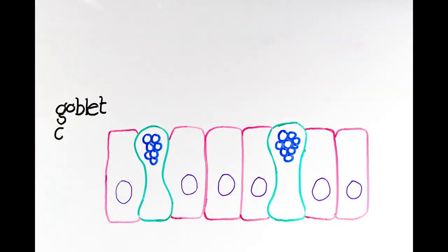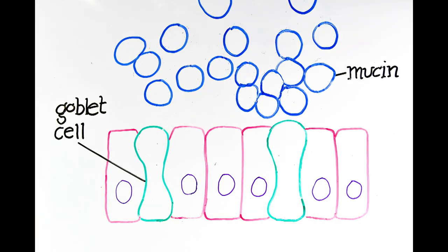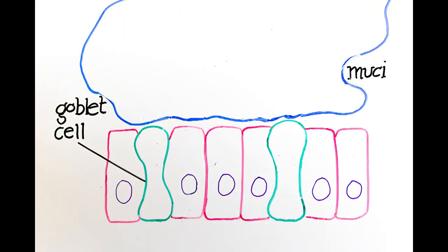Slugs are covered in goblet cells, which secrete a type of protein known as mucin in the form of dry granules. When exposed to water in the environment, these mucins can expand to over 100 times their initial volume, forming mucus.